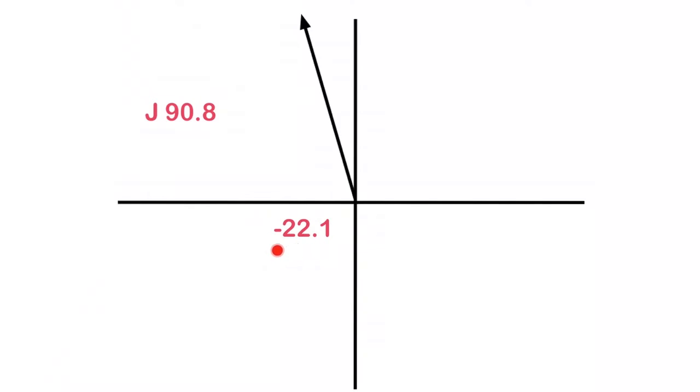So here we go, I've got negative 22.1 here, that moves me into the second quadrant, and I've got j 90.8 here, then I'm going to work out what my resultant is. So what is this guy here, that will be the answer for my polar form.